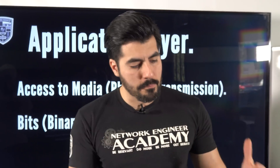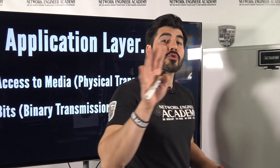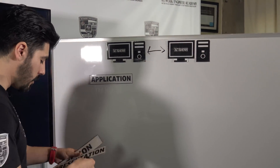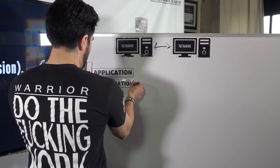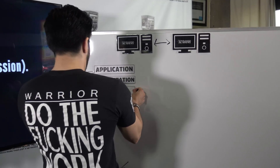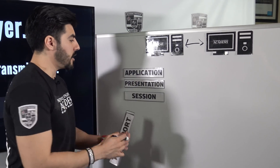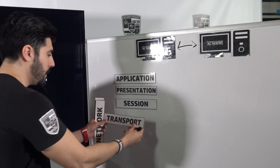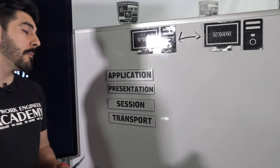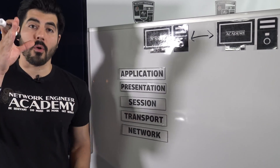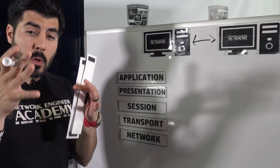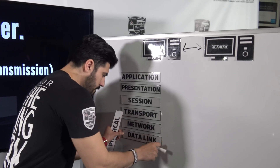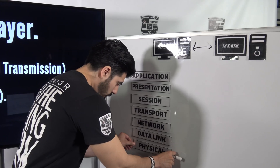Now let's jump to the whiteboard. Application layer — layer seven; presentation layer — layer six; session layer — layer five; transport layer — layer four; network layer — layer three; data link layer — layer two; and physical layer — layer one. I'm repeating this because I want to make sure it sticks.